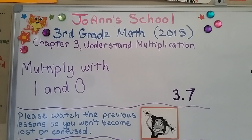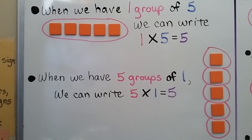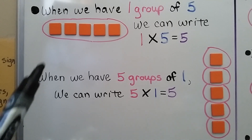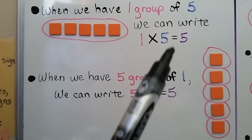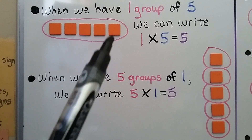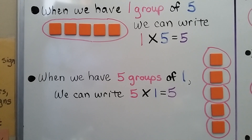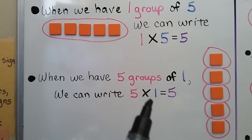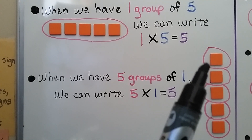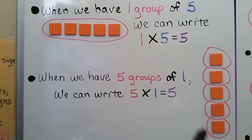Lesson 3.7: Multiply with 1 and 0. When we have one group of 5, we can write 1 times 5 is equal to 5. We have one group with 5 in the group. When we have 5 groups of 1, we can write 5 times 1 equals 5. Here we have 5 groups with 1 in each group.